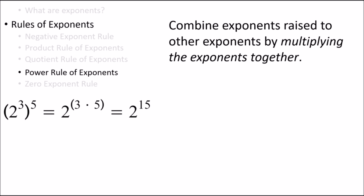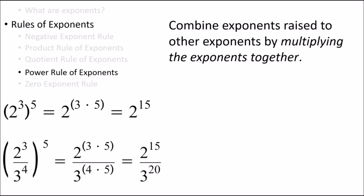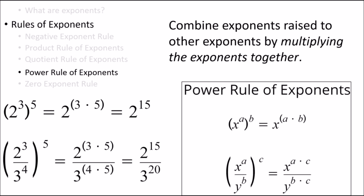Let's try a harder looking example. We can apply the power rule of exponents here as well. We can distribute exponents on the outside of the parentheses to any terms inside the parentheses that are multiplied or divided. So we can distribute the 5 exponent to the numerator to get 2 to the 15, and we can distribute it to the denominator to get 3 to the 20. We can simplify exponents raised to other exponents by just multiplying the exponents together, and we can distribute the exponent to any terms that are multiplied or divided inside parentheses.